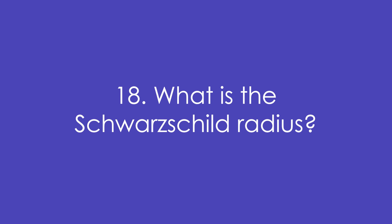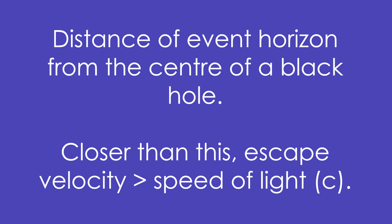Question 18: What is the Schwarzschild radius? It's the distance of the event horizon from the centre of a black hole. Closer than this, the escape velocity is greater than the speed of light.